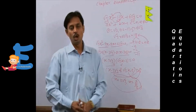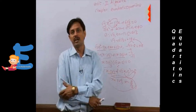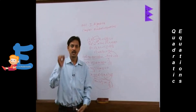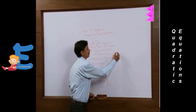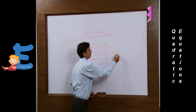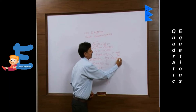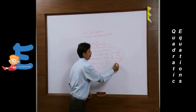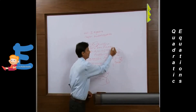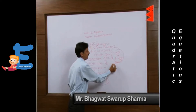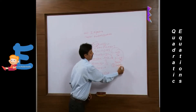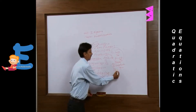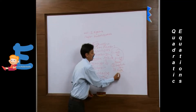Any quadratic equation, or any equation which can be reduced to a quadratic, can be solved by any of three methods. First: the quadratic formula, where α = (-b + √D) / 2a and β = (-b - √D) / 2a. Second: completing the square. Third: the factorization method, that is splitting the middle term.